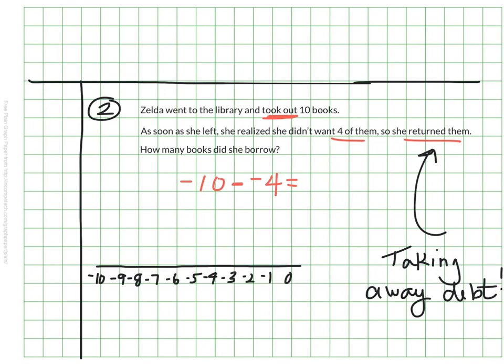And if I was representing this on the number line, I would start by saying here she is owing 10 books. But then she's getting rid of the fact that she owes four of those books. So I have to go to the right. One, two, three, four. And that would land me here. So I know that, of course, we all know this already, she's at a negative six. She owes six books.